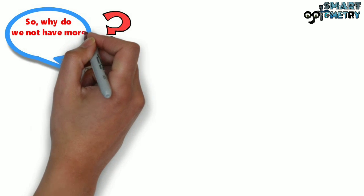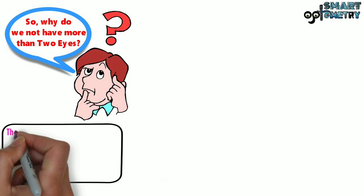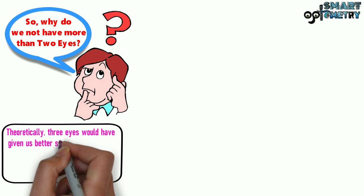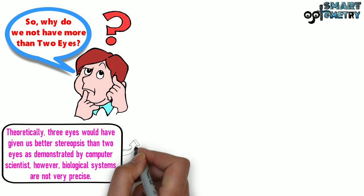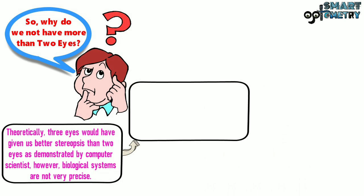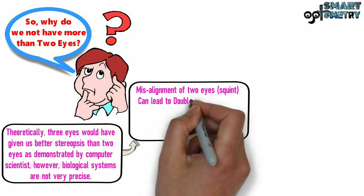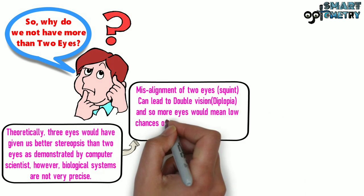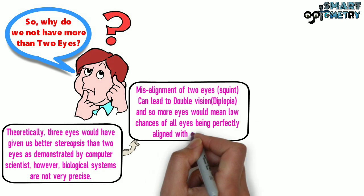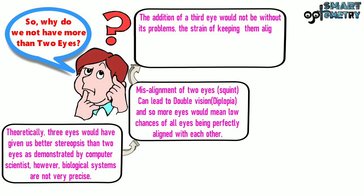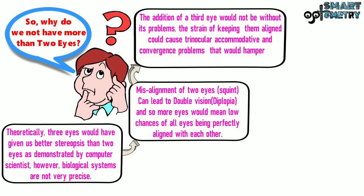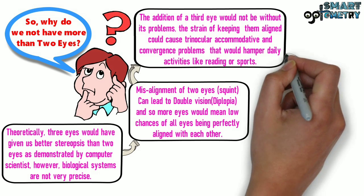So, why do we not have more than two eyes? Theoretically, three eyes would have given us better stereopsis than two eyes, as demonstrated by computer scientists. However, biological systems are not very precise. Misalignment of two eyes — squint — can lead to double vision and diplopia, so more eyes would mean lower chances of all eyes being perfectly aligned with each other. The addition of a third eye would not be without its problems. The strain of keeping them aligned would cause trinocular accommodative and convergence problems that would hamper daily activities like reading or sports.